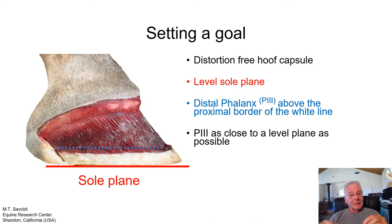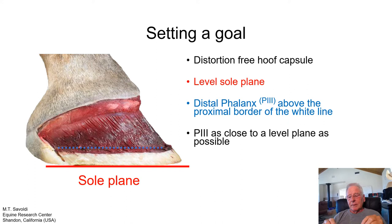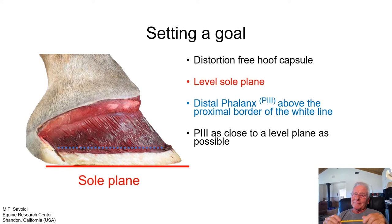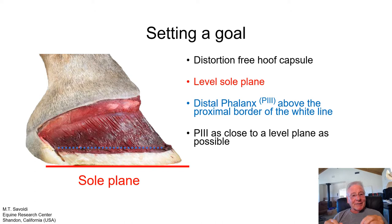Having the P3 bone as close to a level plane as possible can be controversial, because studies show the P3 bone is in a positive palmar angle in the majority of horses. However, just because something is common doesn't mean it's necessarily good for the P3 bone. If you want to cause bone pathology and destroy the toe of a P3 bone, all you need to do is put it in a positive palmar angle — soon you will see changes developing in the toe of the P3 bone. A horizontally planed P3 bone has far fewer problems or damages.